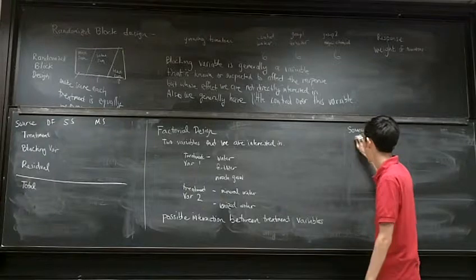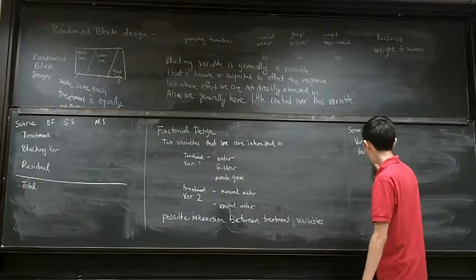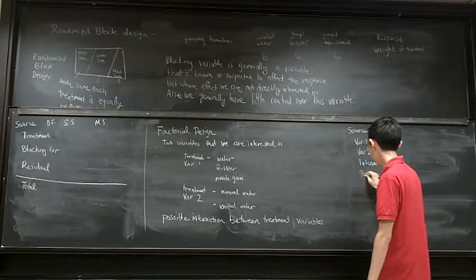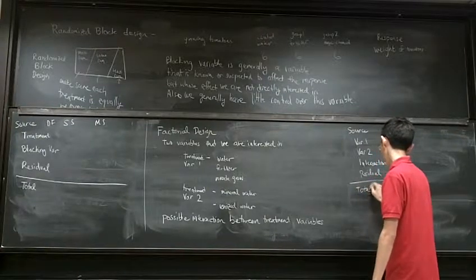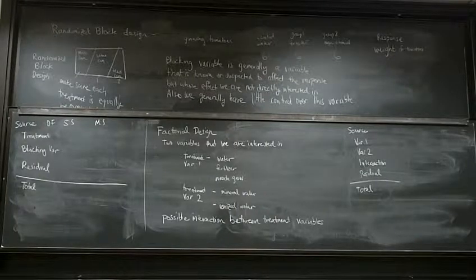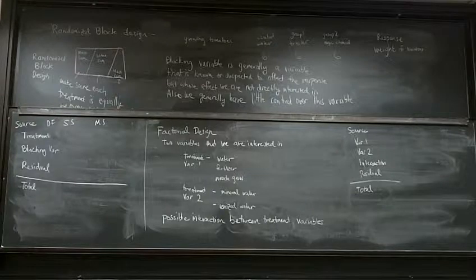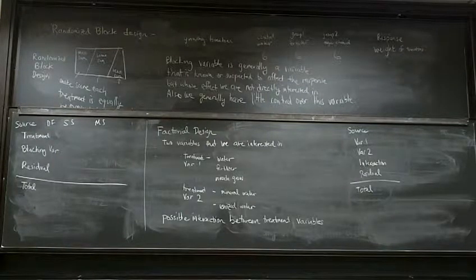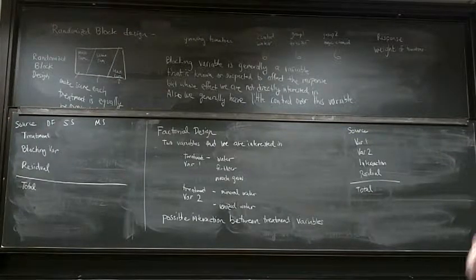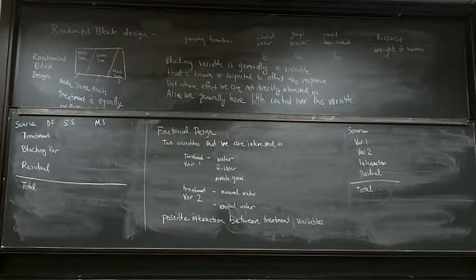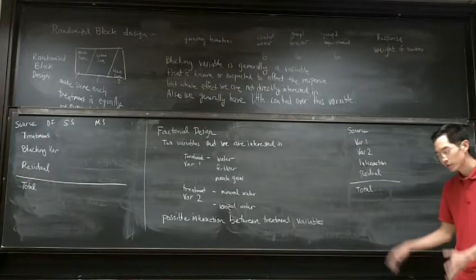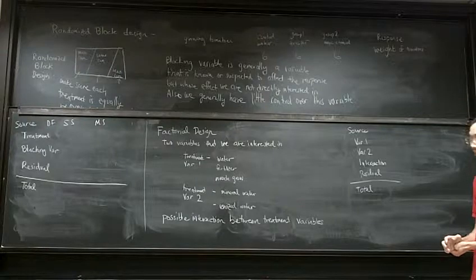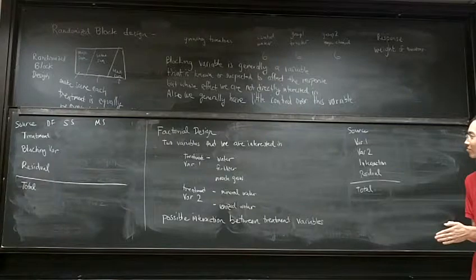So when you do your analysis, you'd have variable 1, variable 2, the interaction. So the interaction and the residual. So you are not you don't have to know the math behind it but you should know that they exist and you're responsible for one way are there any questions?